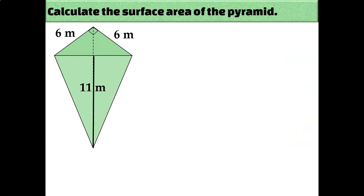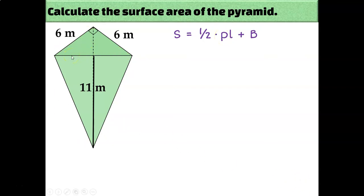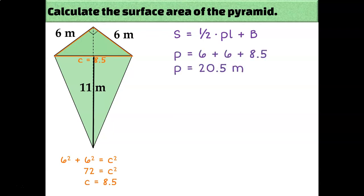Here I have a triangular pyramid. I can tell it's a triangular pyramid because it has one base in the shape of a triangle, and the other faces meet at the apex. Since it's a pyramid, I'll use the surface area of a pyramid formula. The first thing I need is the perimeter of the base — the triangular base is the same right triangle as the previous example, with legs of 6 and a hypotenuse of 8.5, giving a perimeter of 20.5 meters.